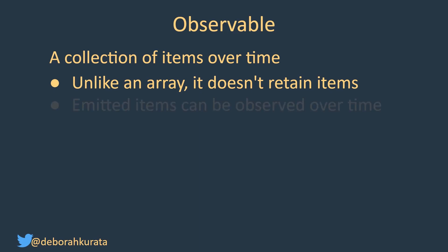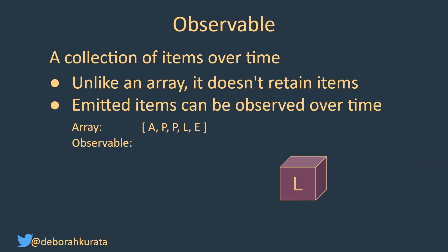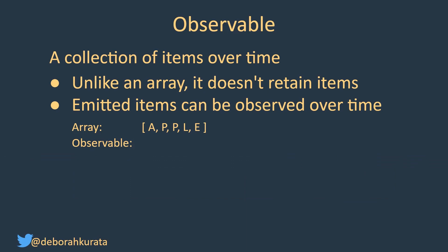The emitted items can be observed over time. Say, for example, you're tracking key presses. You could put those into an array — so you have an A, P, P, and so on. If that was an observable, it would instead be like that and that and that — they're just kind of occurring over time. So if you said, what's the third one, it would be, I don't know, I just gave you a bunch of them. I don't know what the third one was. So that's something really important to keep in mind as you're working with observables.